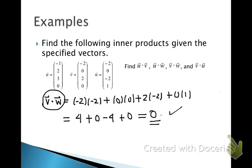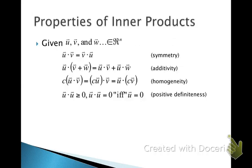As part of your reading assignment, first write the definition of the inner product, and second find the inner product of u with w. Here are some of the properties of the inner product. The first one we've just talked about: the inner product of u with v is equal to the inner product of v with u. That's called symmetry.